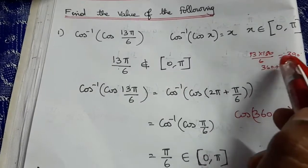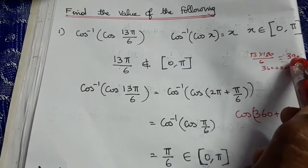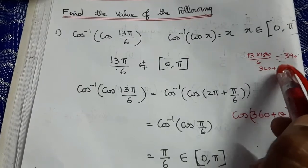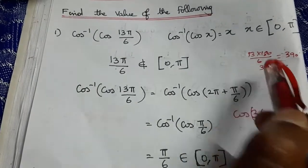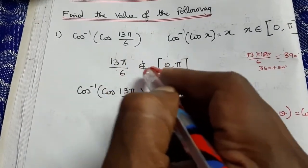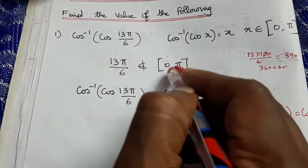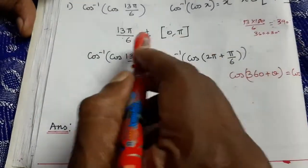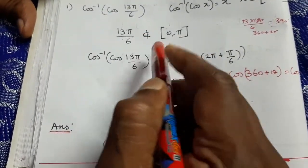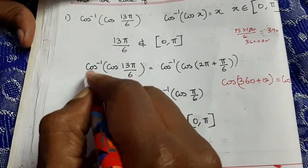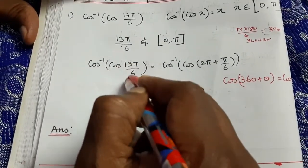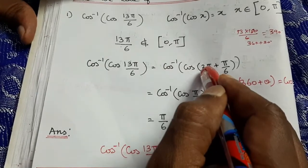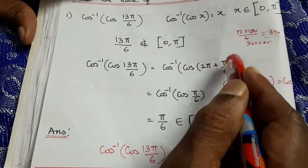13π/6 = (13 × 180)/6 = 390°. So 390° = 360° + 30°. This means 13π/6 does not lie in [0, π]. So we rewrite: cos⁻¹(cos(13π/6)) = cos⁻¹(cos(2π + π/6)).